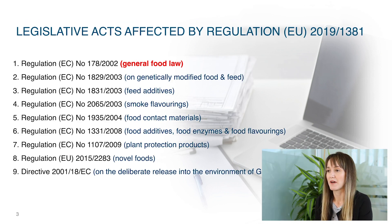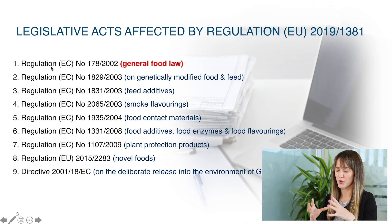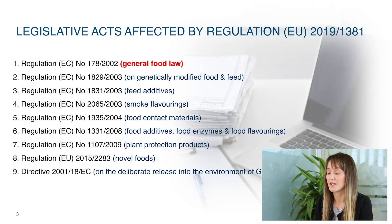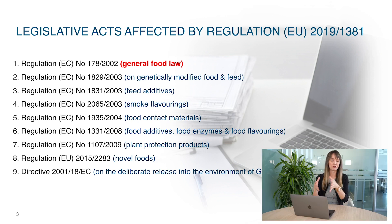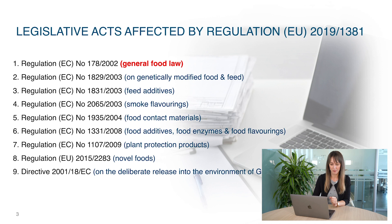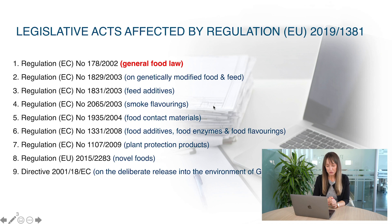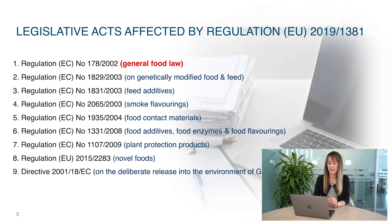There are nine legislative acts affected by the transparency regulation. First and most impacted is the General Food Law, which applies to both food and feed applications. The regulation also applies to genetically modified food and feed, Regulation 1831 on feed additives, smoke flavorings, food contact materials, food additives, enzymes and flavorings, plant protection products (pesticides), biocides, novel foods, and Directive 2001 on the deliberate release into the environment of genetically modified organisms.